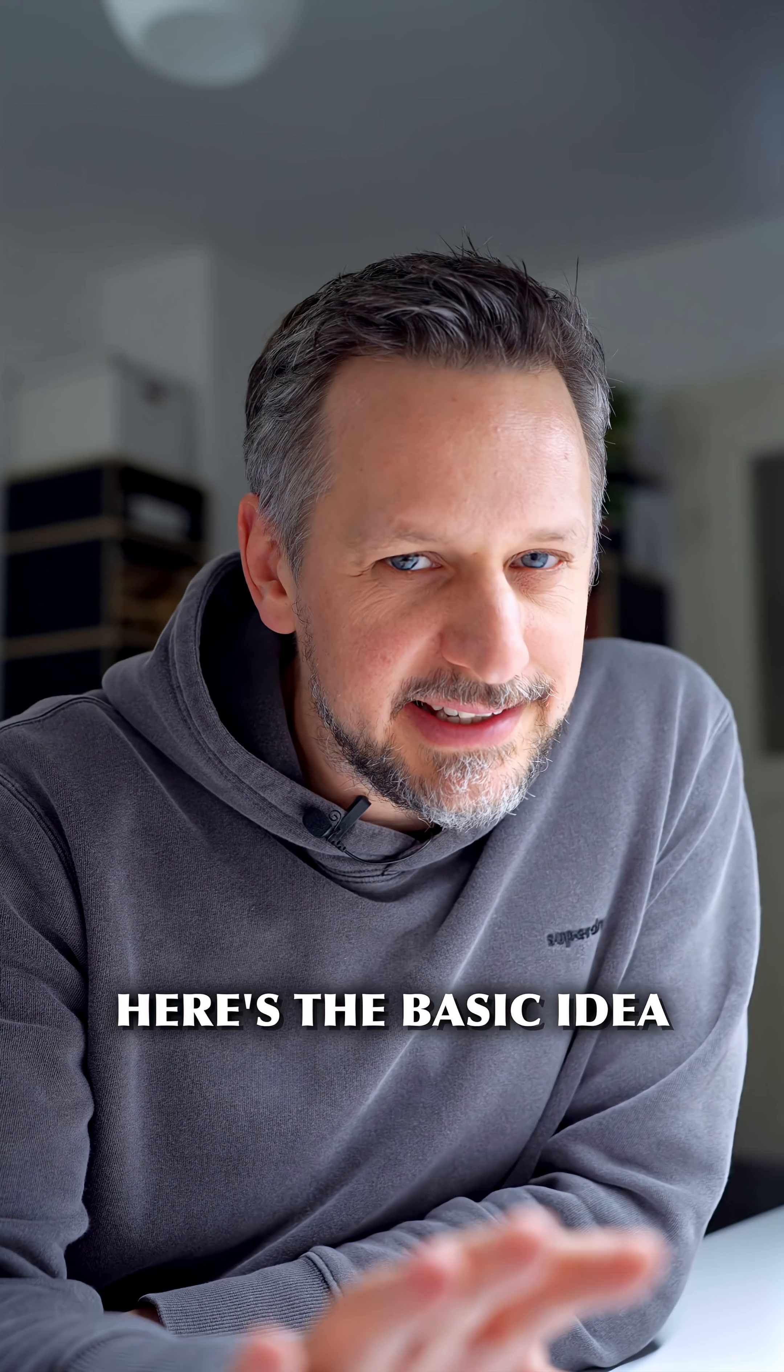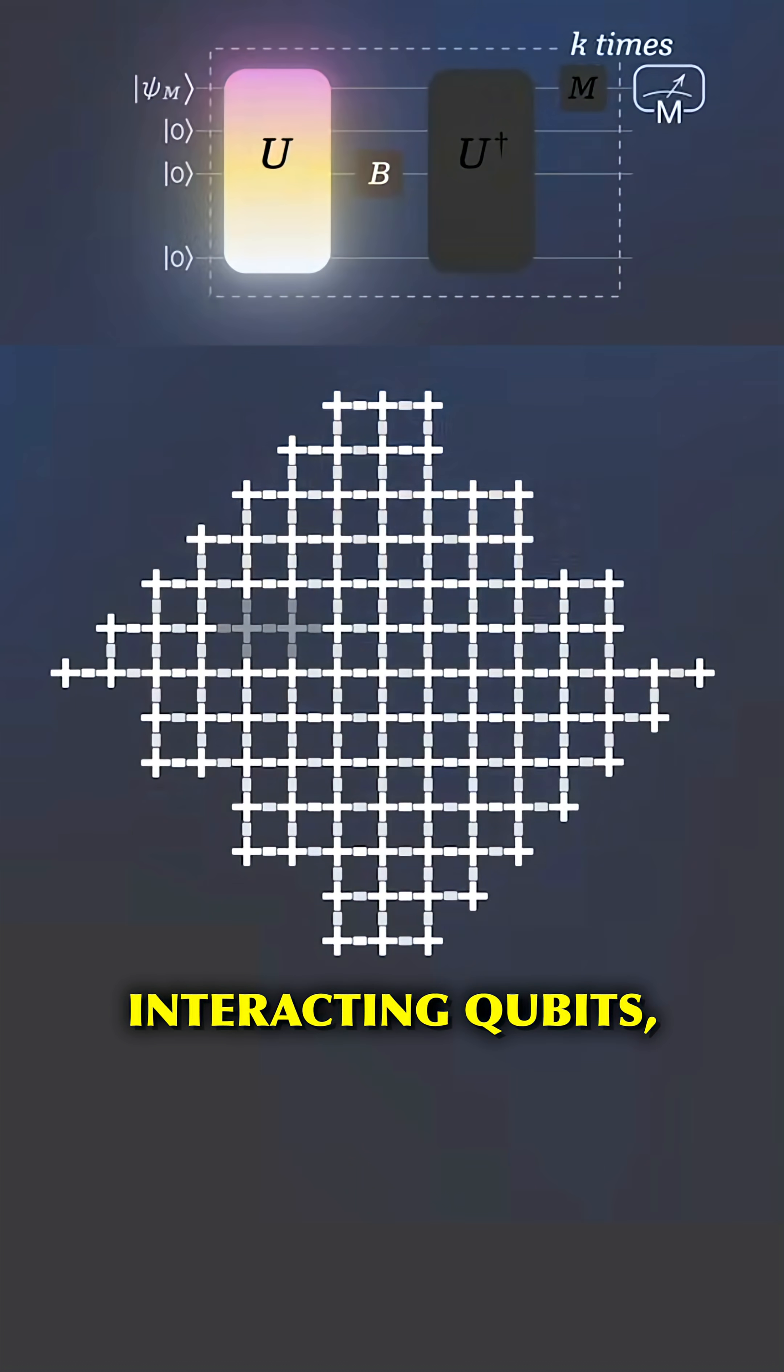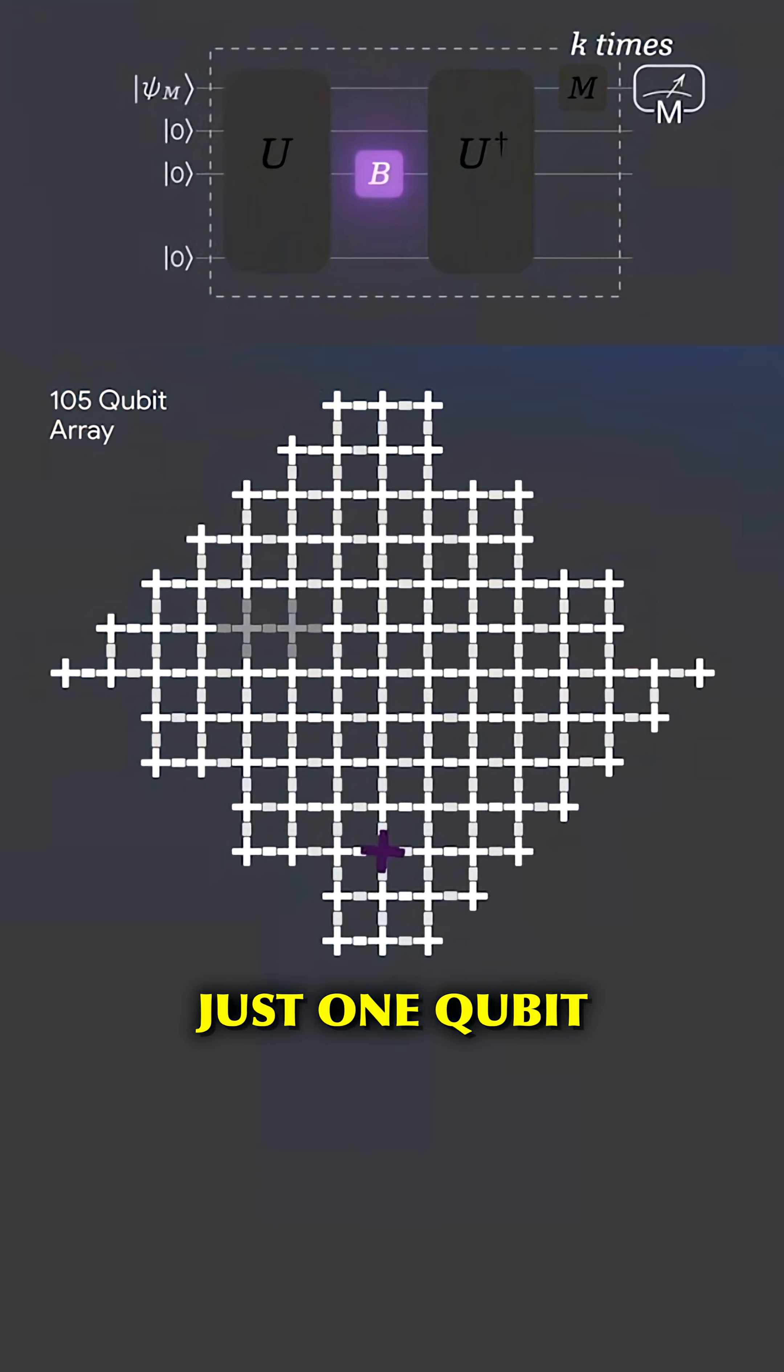Here is the basic idea behind an OTOC. Starting with a quantum system with many interacting qubits, you evolve it forward in time and it becomes entangled. Then you apply a small perturbation to just one qubit and run the time evolution in reverse to get back to the original state.